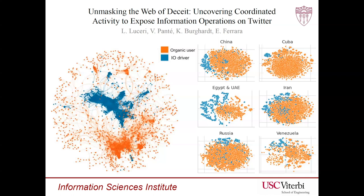In this work, we leverage a comprehensive dataset encompassing 49 million tweets from six countries, including verified information operations. We unveil that traditional methods often fall short in pinpointing the orchestrators and coordinated actors behind these campaigns. Our proposed framework based on node centrality filtering emerges as a superior solution, especially when fusing multiple behavioral indicators to build similarity networks.